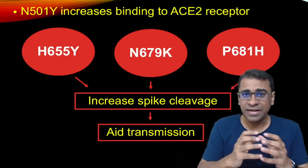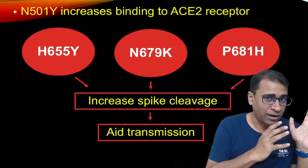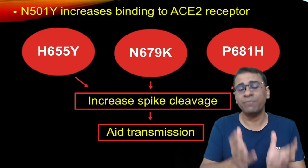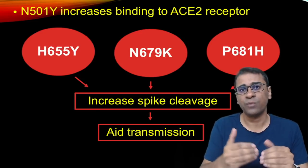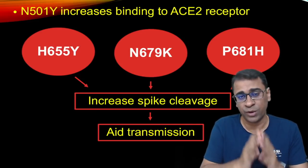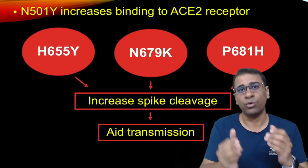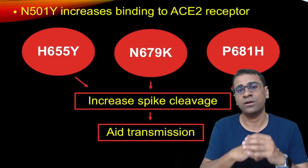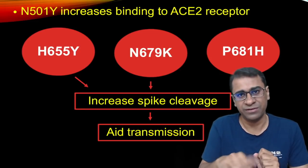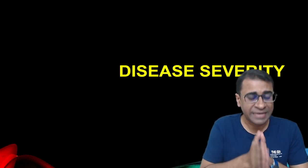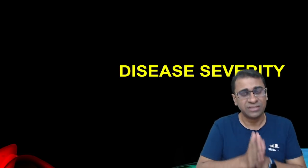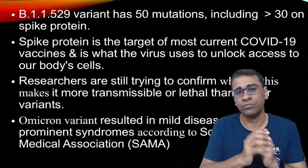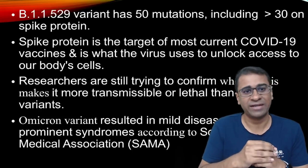Scientists have now seen — cases are not very high, so we cannot confirm this definitively — but scientists have suggested that the infectivity of this virus is 500 times. Yes, you heard it correctly: 500 times more than the Delta virus, which was the previous major variant. So we can understand the disease transmissibility, but does increased transmission necessarily mean it is more severe? For that we need to know more facts.